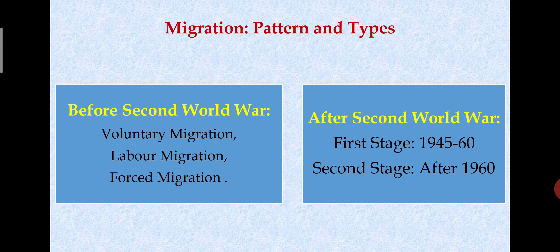Forced migration was basically driven by conflict and damage. People were sent through the slave trade. This can be classified as forced migration. This trend was seen during the Second World War and its aftermath.